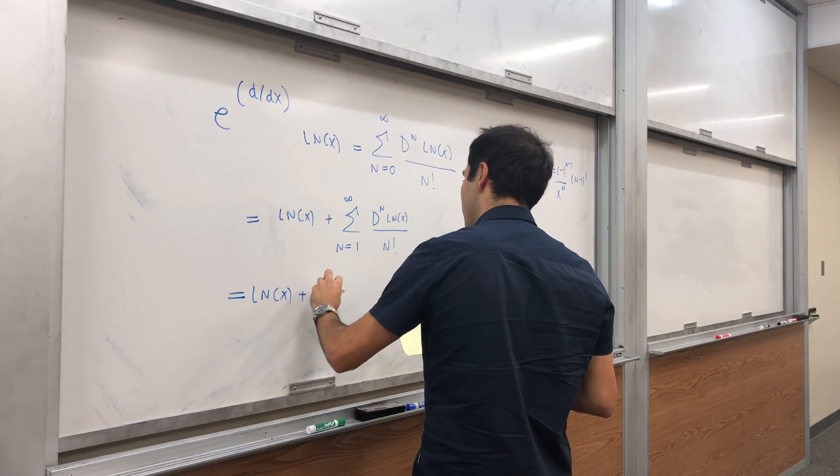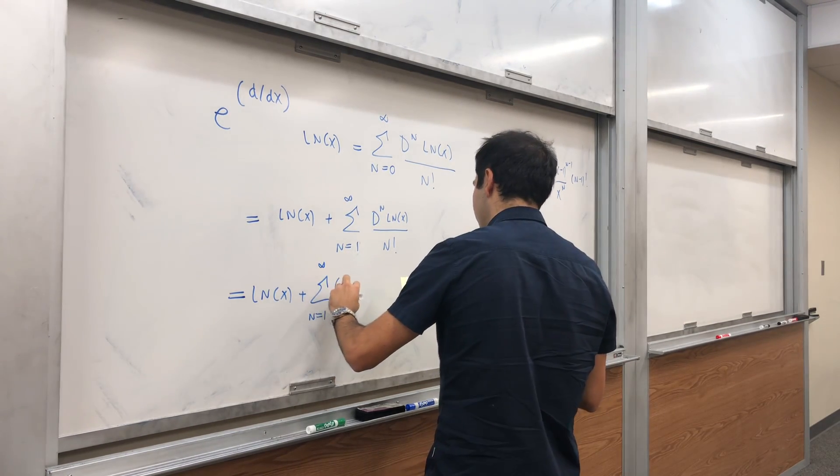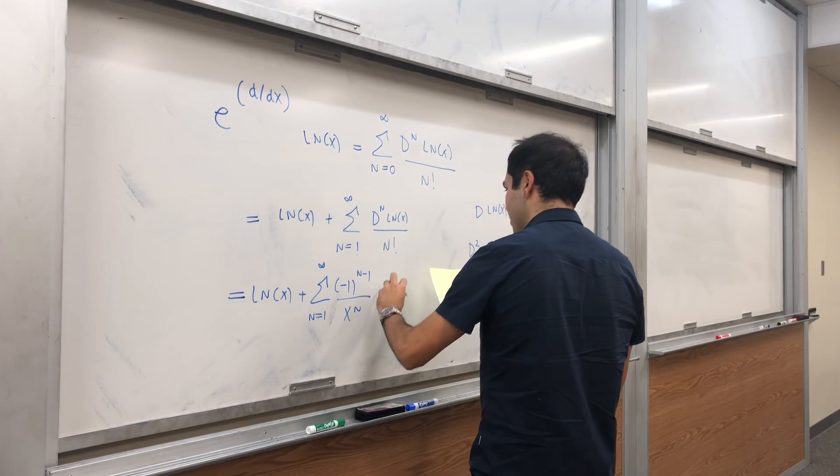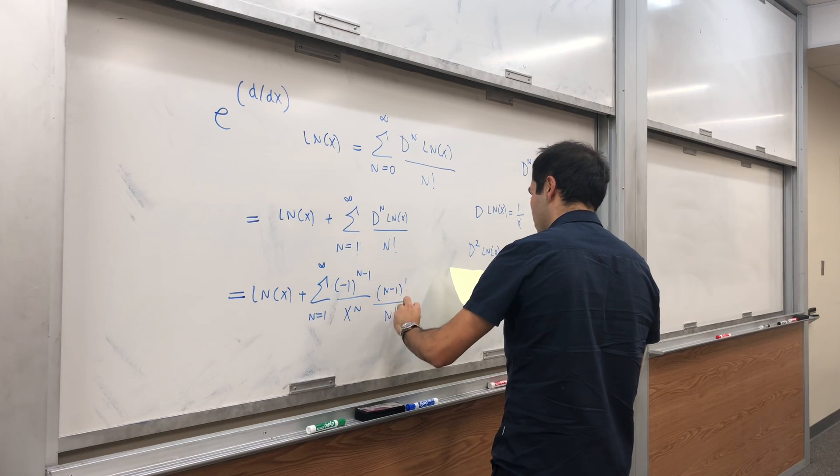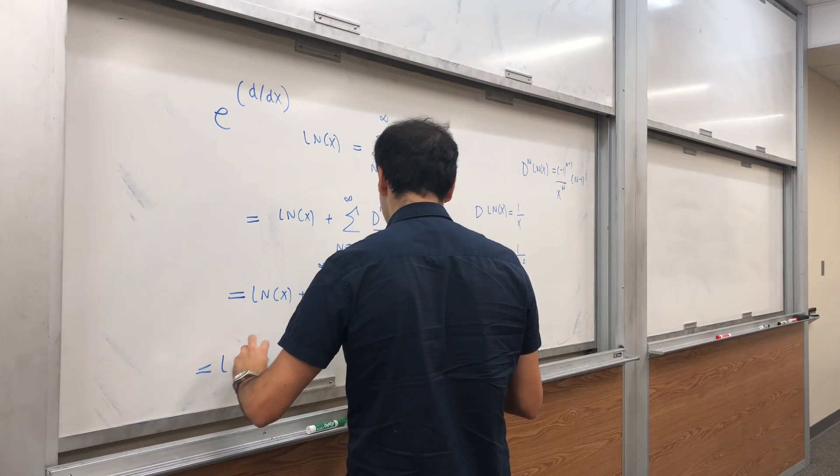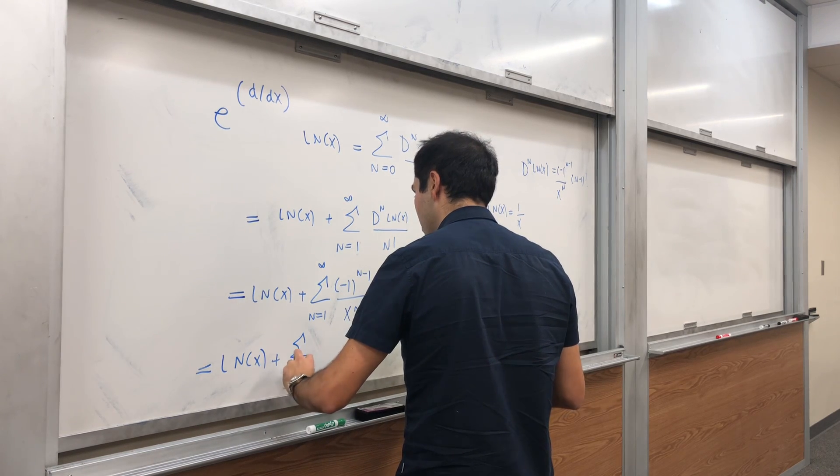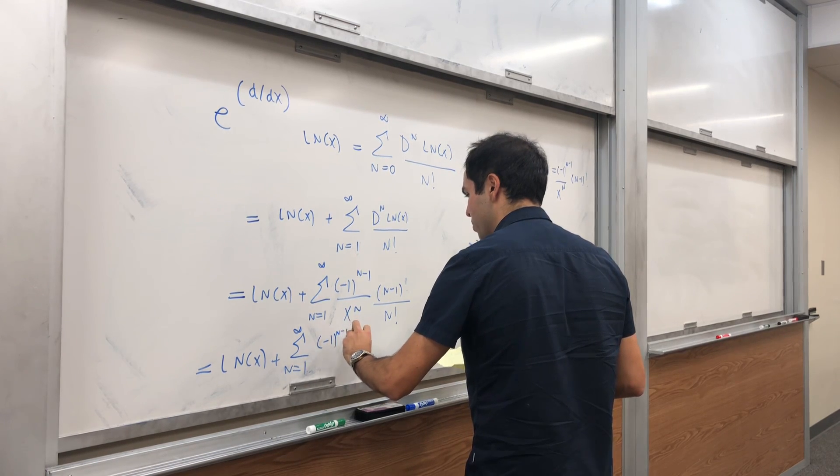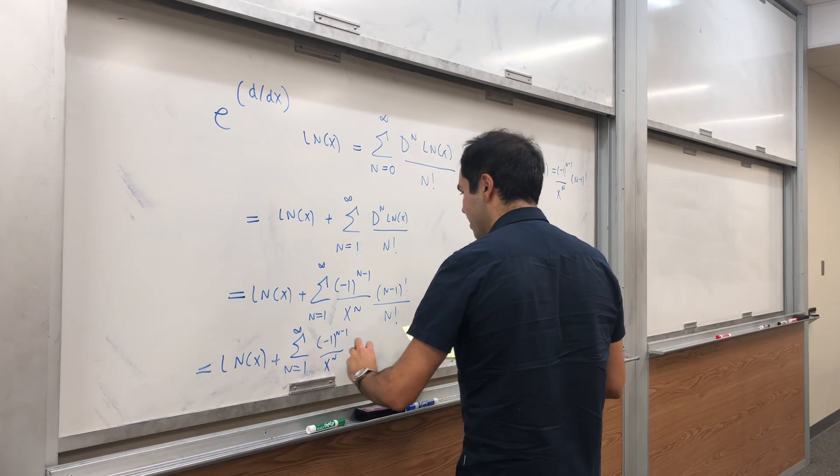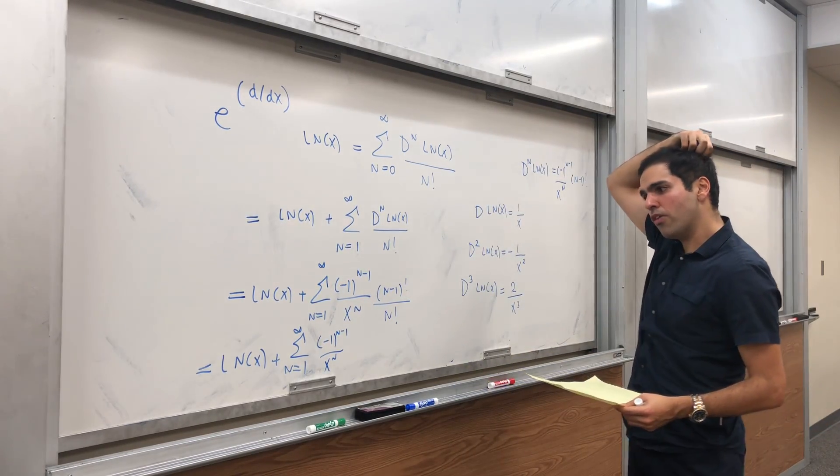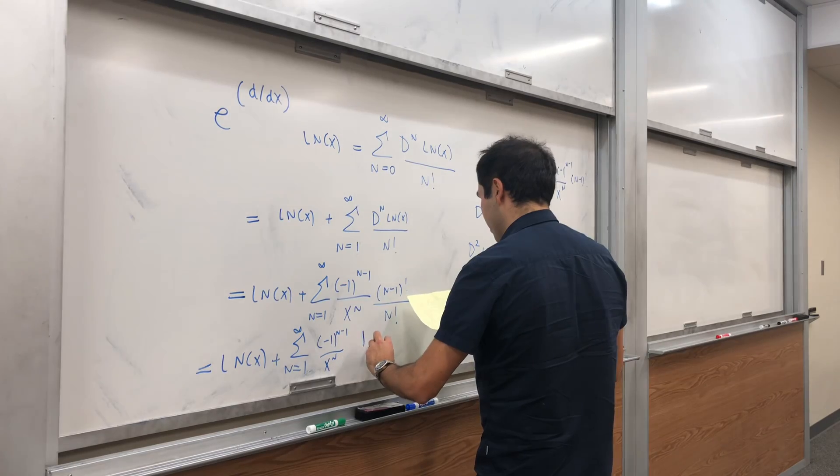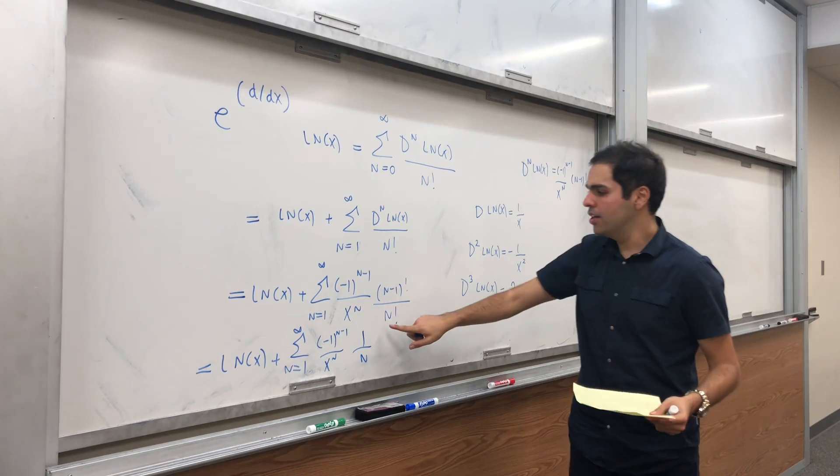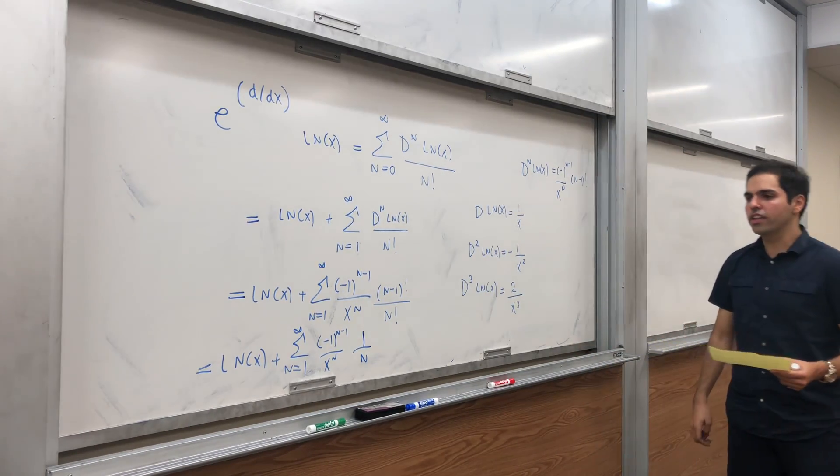So it's ln(x) plus the sum from n = 1 to infinity of (-1)^(n-1) times (n-1)! over n! times 1 over x to the n. And that's just ln(x) plus the sum from 1 to infinity of (-1)^(n-1) times 1 over x to the n times 1 over n, because (n-1)! over n! is just 1 over n. This is just the product of n minus 1 going down to 1, and this is the product of n going down to 1.